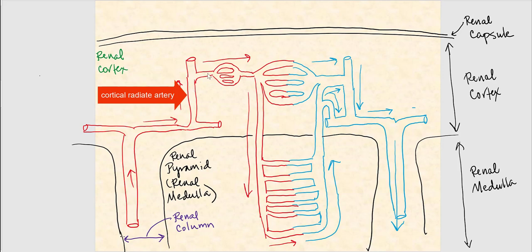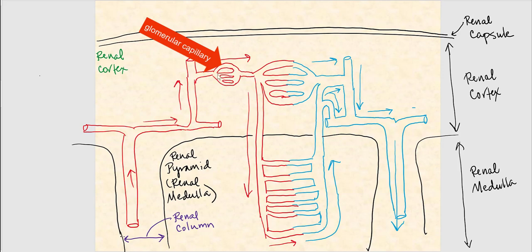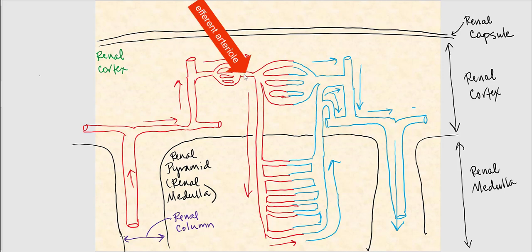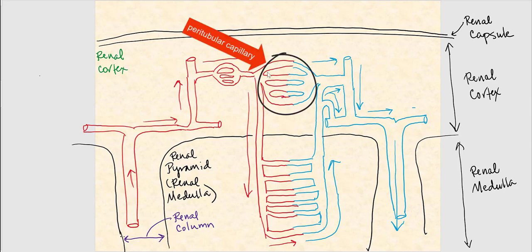From there, blood flows into the cortical radiate artery, which is strictly in the renal cortex. Then it drains into the afferent arteriole, then into the glomerular capillary — which is part of what we call the glomerulus, to be discussed later. Then blood flows into the efferent arteriole, from which blood has two pathways: the peritubular capillary, also in the renal cortex.